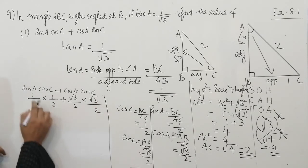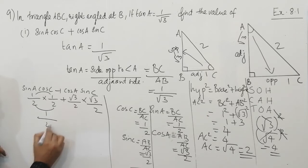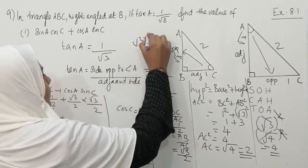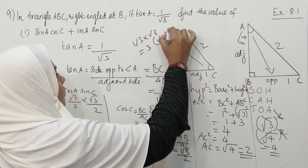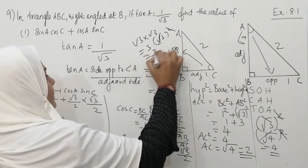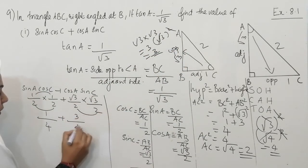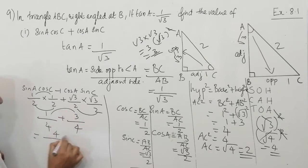Substituting: 1 by 2 multiplied by 1 by 2 gives 1 by 4. Root 3 by 2 multiplied by root 3 by 2: root 3 times root 3 is 3, and 2 times 2 is 4, giving 3 by 4. Since the denominators are the same we can add directly: 1 plus 3 is 4, and 4 by 4 equals 1. So the answer to the first question is 1.